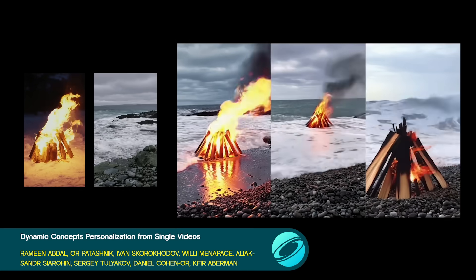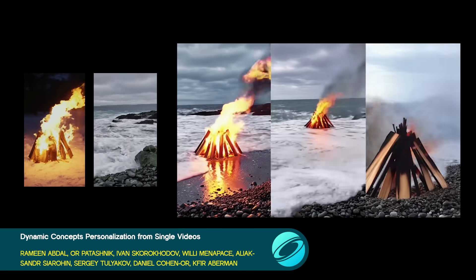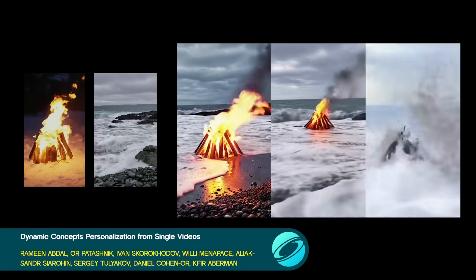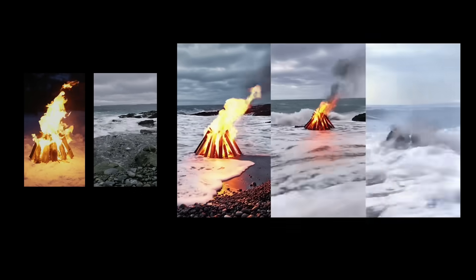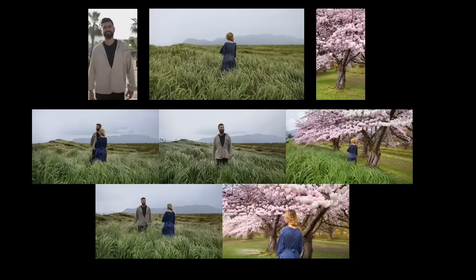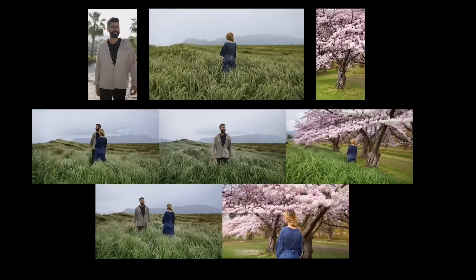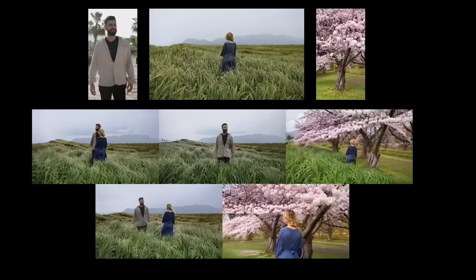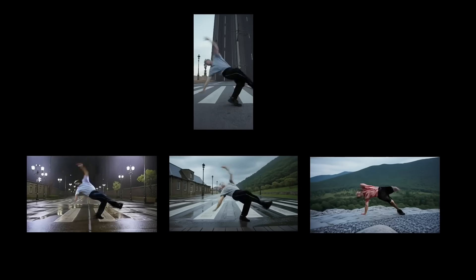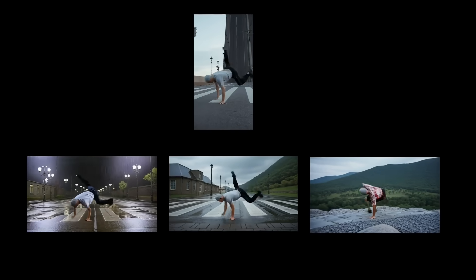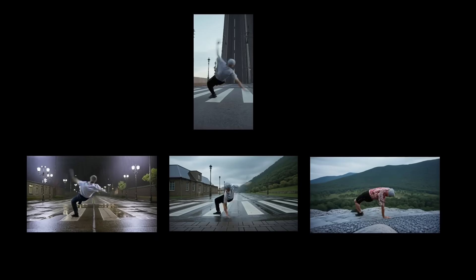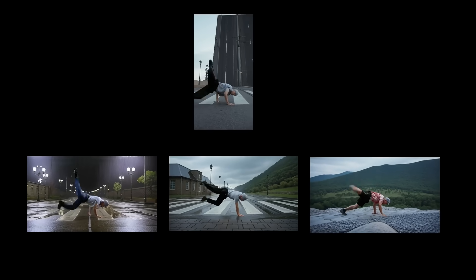This paper shows how to represent dynamic objects in video generation by first fine-tuning on appearance and then on motion. The resulting dynamic concepts can then be combined with other prompt data to control generated videos.